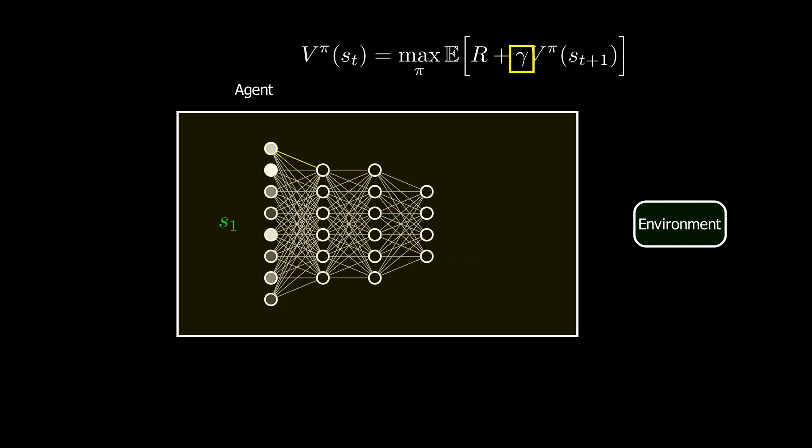Gamma is called the discount rate. It determines how much future rewards contribute to the present value. It is a fixed hyperparameter that ranges between 0 and 1. If we set it close to 1, the second term in the Bellman equation will receive a higher weight, which means future rewards will be more important than the instant reward represented by the first term R.